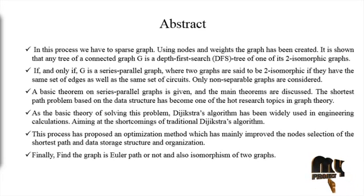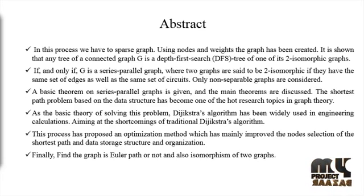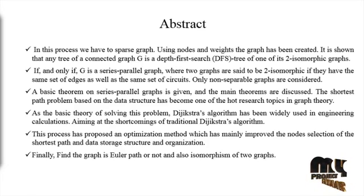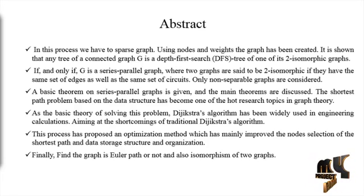A graph may be undirected, meaning there is no distinction between the two vertices associated with an edge, or its edges may be directed from one vertex to another. Graphs are one of the prime objects of study in mathematics. The shortest path problem is the problem of finding the path between two vertices in a graph such that the sum of the weights of its edges is minimized.